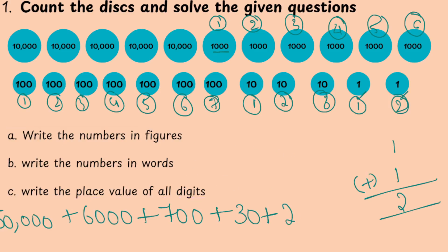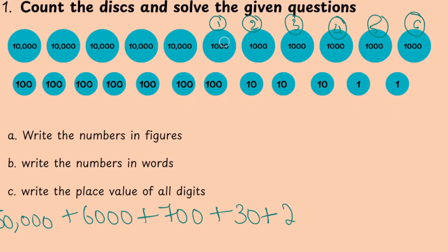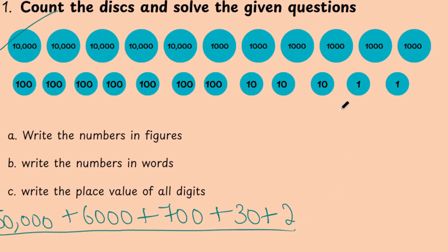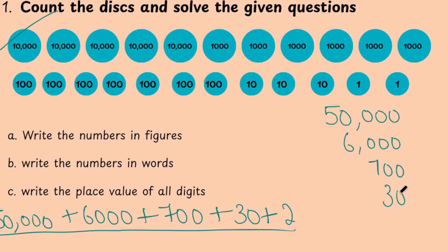Done. We have added all the disks and counted everything. Now the next step is to add all these numbers. Write it as 50,000, then 6,000, then 700, then 30, then 2. Now add all: 0 plus 0 is 0, 0 plus 0 is 0. Then 0 plus 2 — what is 0 plus 2? It is 2. If you add any number with 0, the same number is the answer. So we get 2.